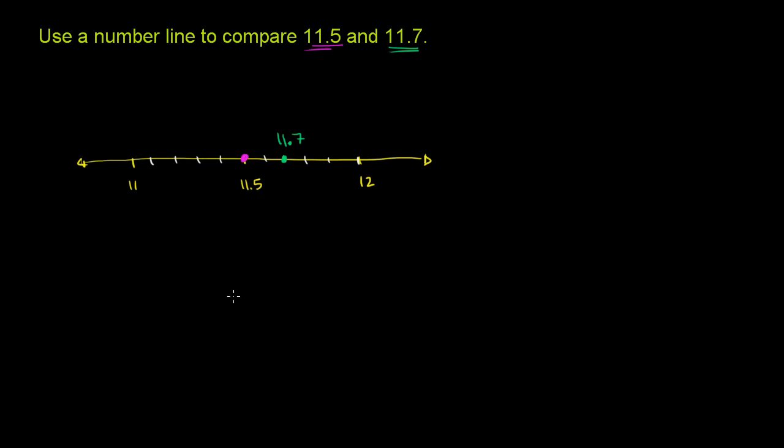And the way we've drawn our number line, we are increasing as we go to the right. 11.7 is to the right of 11.5. It's clearly greater than 11.5.